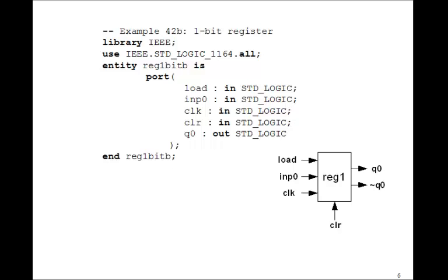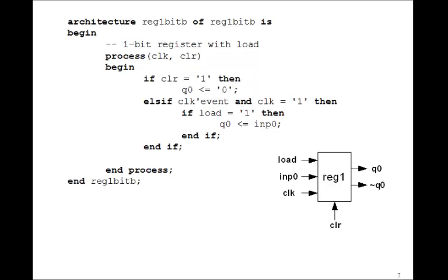But now we don't have to write the logic equation for D and look inside to see the flip-flop. We can just have a process clock and clear. If clear is 1, Q0 gets 0. That's our asynchronous clear.